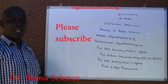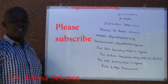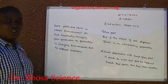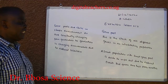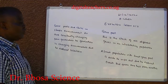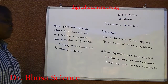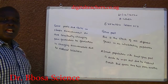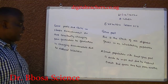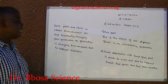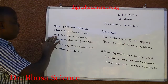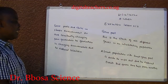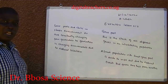Gene pool. This is the stock of all different genes in an interbreeding population. A small population with a small gene pool is easier to wipe out due to natural events that favor one trait over the other. Gene pools are static in a stable environment, but are constantly changing from generation to generation in changing environments due to natural selection.